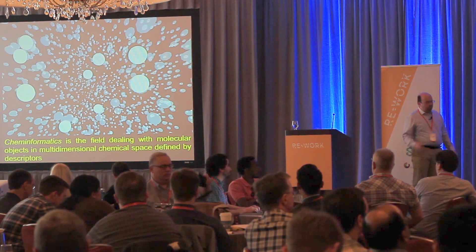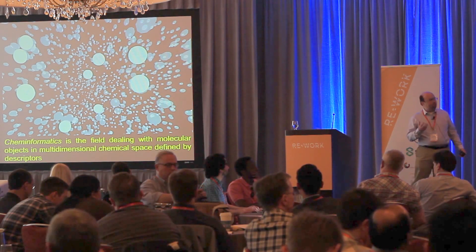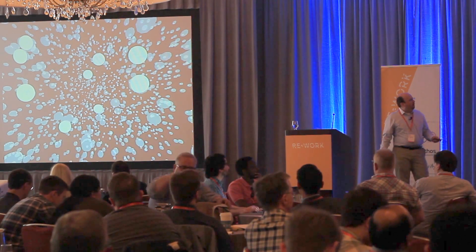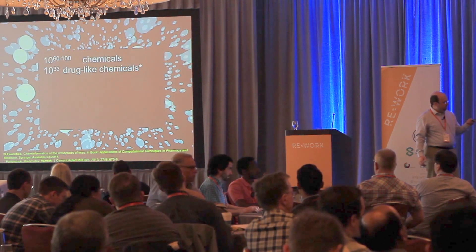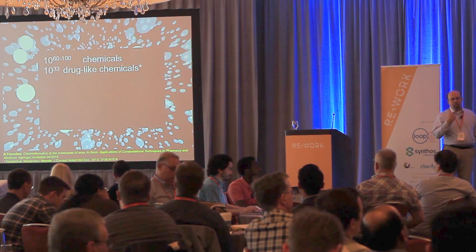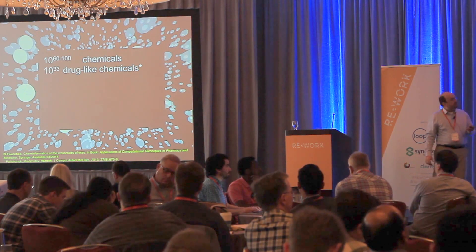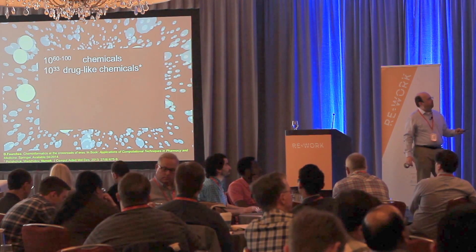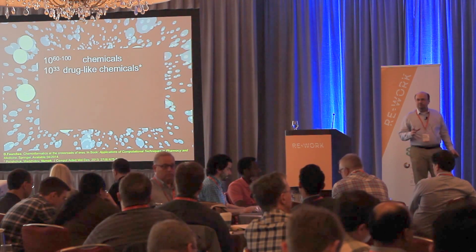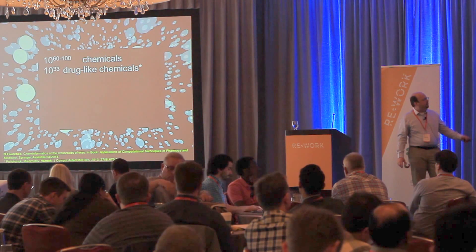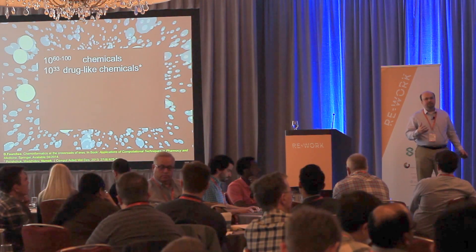Cheminformatics is chemistry and informatics. We deal with molecules in a high-dimensional space defined by features, or as we call them, descriptors. The goal of our work is to navigate through the space of molecules looking for new drugs or molecules of interest with particular tailored properties. It's been estimated that the space of all possible unique molecules is huge — up to 10^60. The space of drug-like molecules is 10^33, which is still an insanely large number.